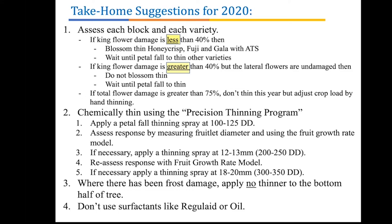If you chemically thin after bloom, use the precision thinning program. Apply a petal fall spray somewhere between 100 and 125 degree days, then assess response by measuring fruitlet diameter. If necessary, apply a normal thinning spray at the 12 millimeter stage between 200 and 250 degree days, reassess with the fruit growth rate model. Probably no one will need a rescue spray at 18–20 millimeters at 300–350 degree days, but we'll see how the season develops. Among chemicals at large fruit size diameter of 18 millimeters, the only thing that has worked consistently for us is Maxcel 7 and oil at 100 parts per million. Two new chemicals being researched — Metamitron and ACC — are not labeled this year but have significant thinning potential at large fruit size.